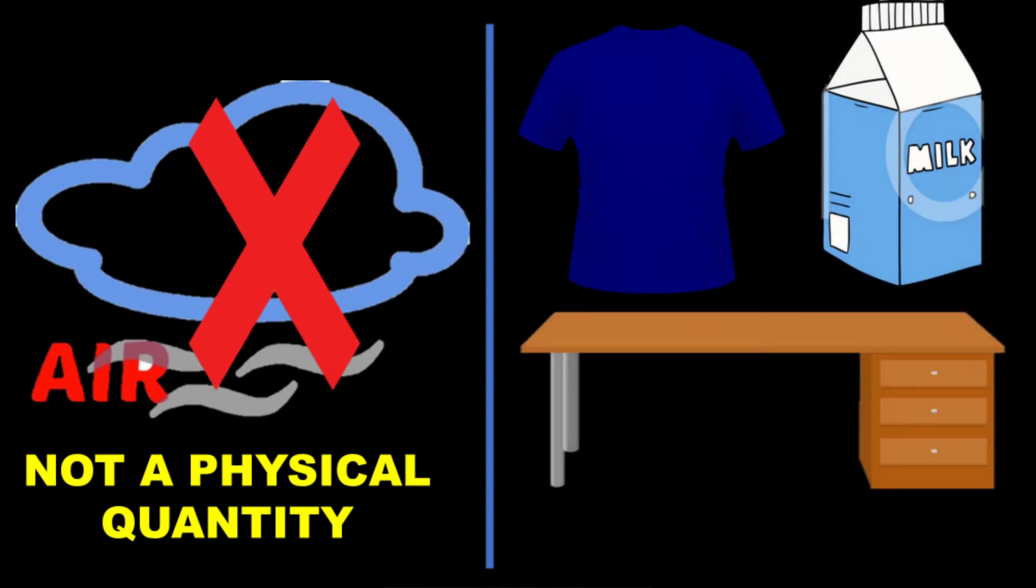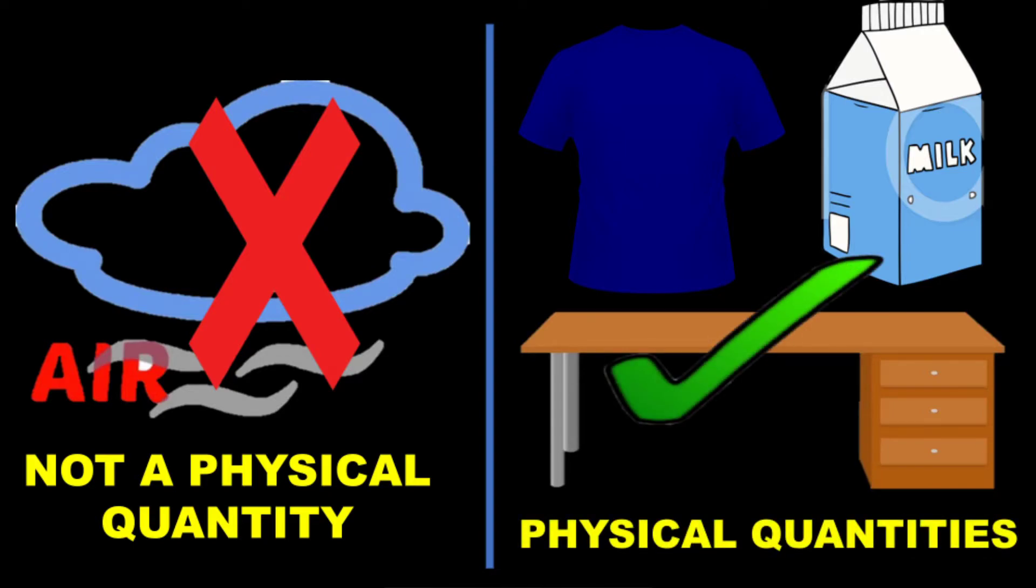Hawa ko aap naap nahi sakta hai. So that is not a physical quantity. But kapda, milk, koi zameen ka tukda, the study table, aap jahaan baithe hai, aap usko naap sakta hai. They are all physical quantities.